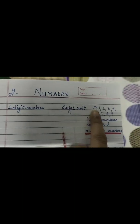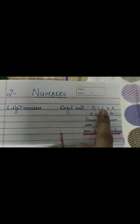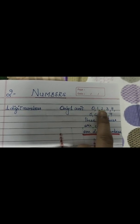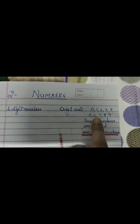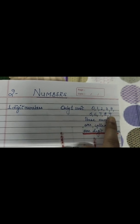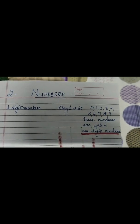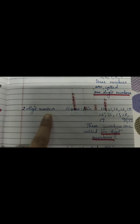Coming to one-digit numbers. A one-digit number has only one unit, starting from zero: zero, one, two, three, four, five, six, seven, eight, and nine. These numbers are called one-digit numbers.